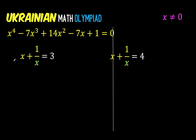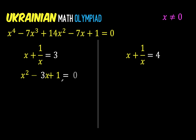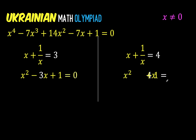Multiplying by x: x times x gives x squared, x times 1 over x gives 1, and 3 times x gives 3x. Written in standard quadratic form this becomes x squared minus 3x plus 1 equals 0. Similarly, on the right side, multiplying each term by x gives x squared plus 1 equals 4x, which rearranges to x squared minus 4x plus 1 equals 0. These two equations are not factorable, so we will use the quadratic formula.